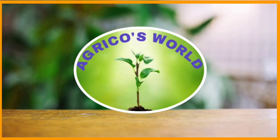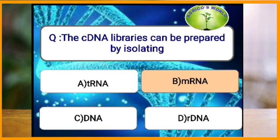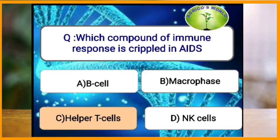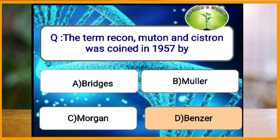cDNA libraries can be prepared by isolating which molecule? The cDNA library represents a collection of only those genes encoded into proteins by a particular organism, and cDNA libraries can be prepared by isolating mRNA. Which component of immune response is crippled in AIDS? The helper T cells of immune response are crippled in AIDS.